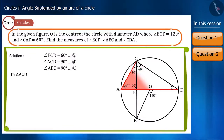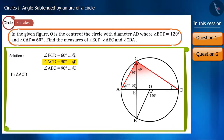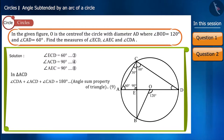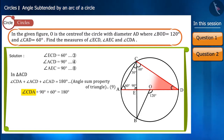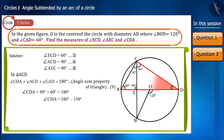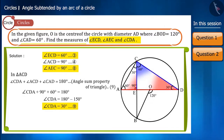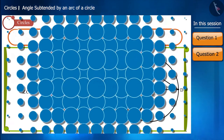Now we have to find the value of angle CDA. In triangle ACD, the value of angle CAD is given and we have determined the value of angle ACD. Using the angle sum property of the triangle, by placing the values of angle CAD and angle ACD, we can determine angle CDA. We get the value of angle CDA as 30 degrees. Thus we found the values of all three angles.